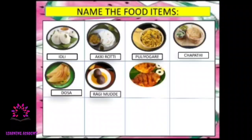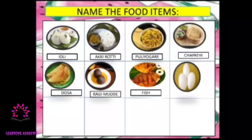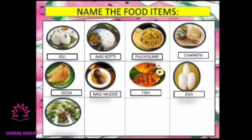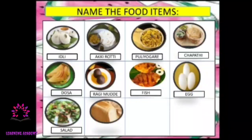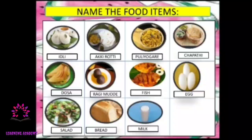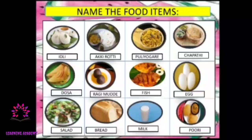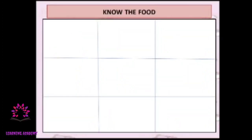What is this? You know, right — this is fish, specially fried fish. This is egg. What is this? This is called salad. This is bread. This is milk. This is called puri.